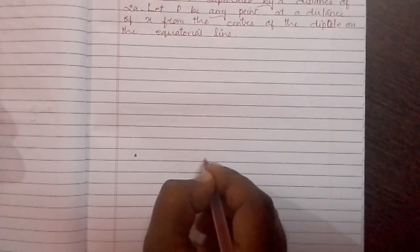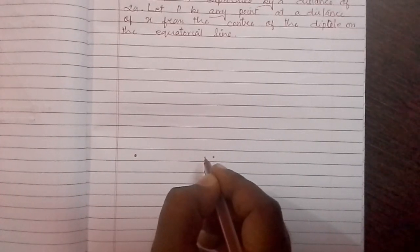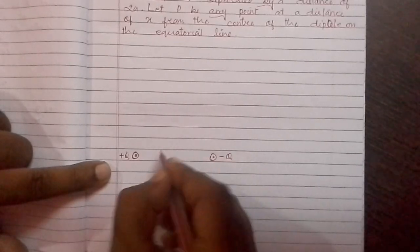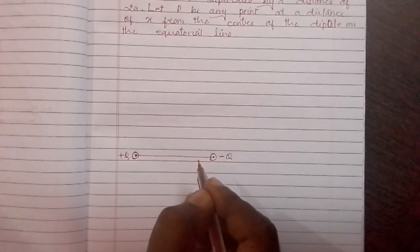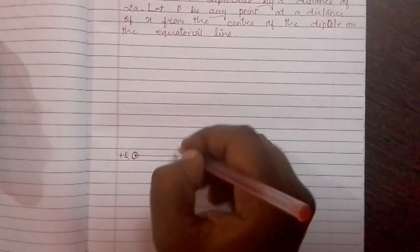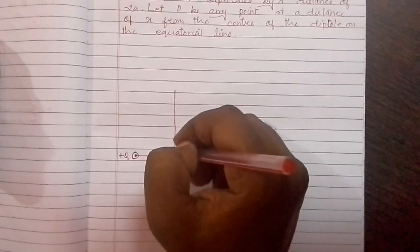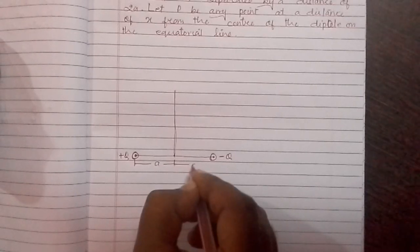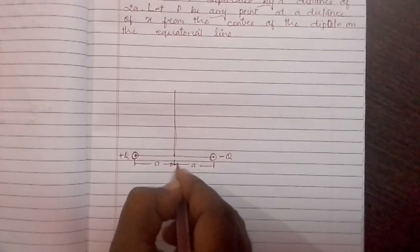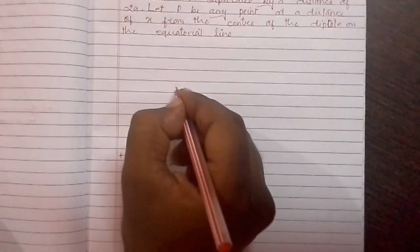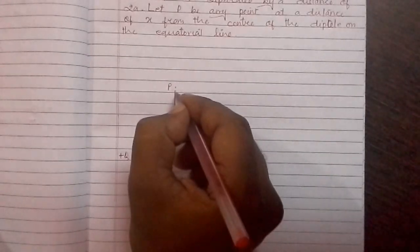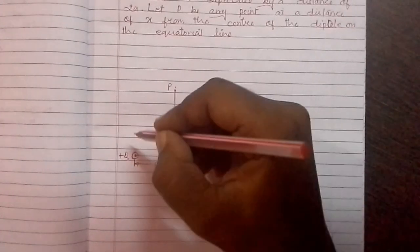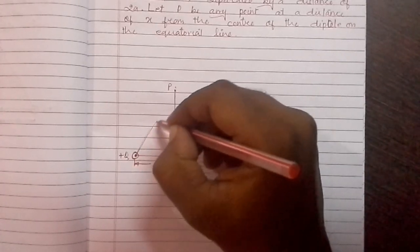Consider a dipole consisting of two charges plus q and minus q separated by a distance of 2a. Let this be the midpoint such that the equatorial line passes through the midpoint. The distance from the positive charge to the midpoint is a, and from the midpoint to the negative charge is also a. Let P be any point on the equatorial line. If you place a test charge at point P, the positive charge will repel it and the negative charge will attract it.